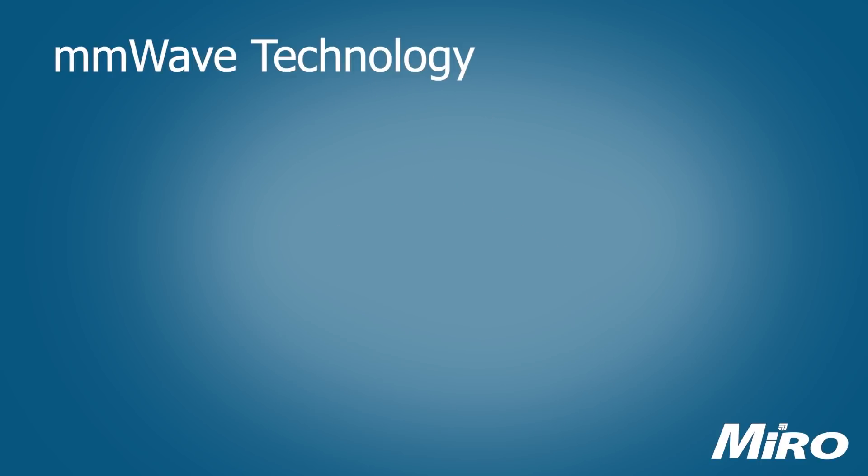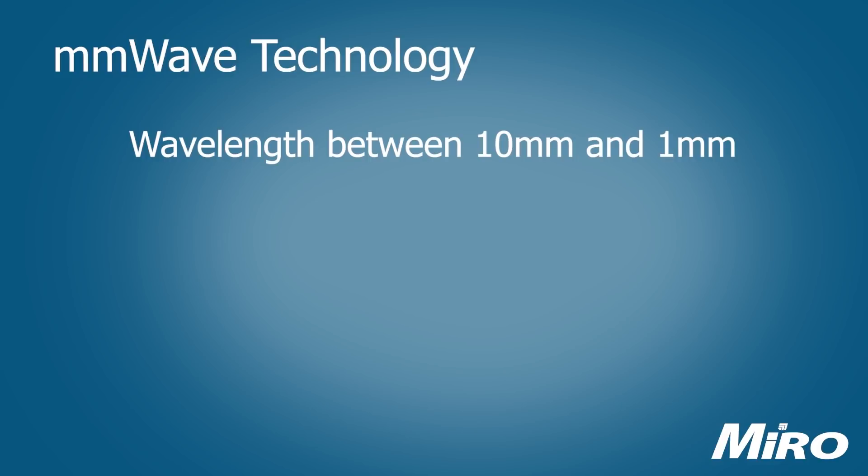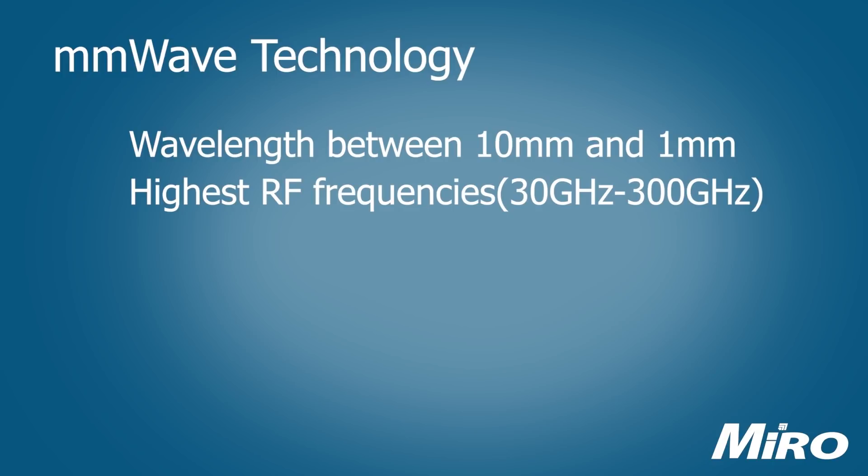To understand the benefits, applications, as well as potential limitations of millimeter wave technology, we need to briefly cover some radio frequency fundamentals. Millimeter waves have a corresponding wavelength of between 10 millimeters and 1 millimeter, hence the name, and occupy the highest frequency portion of the radio frequency spectrum between 30 and 300 gigahertz. This portion of the RF band is also referred to as EHF, or extremely high frequency.